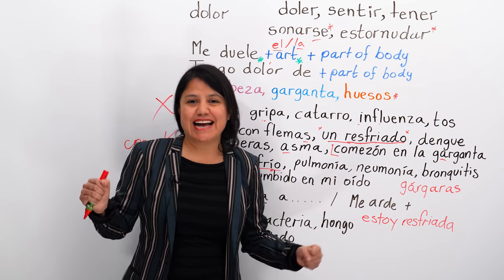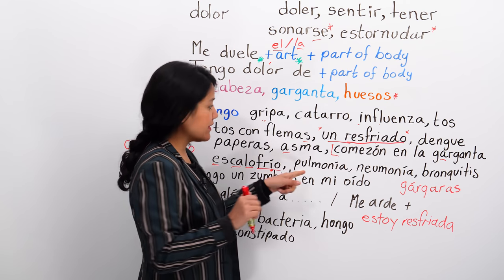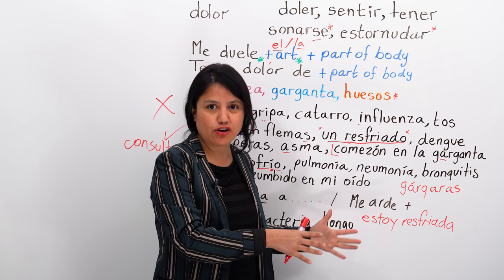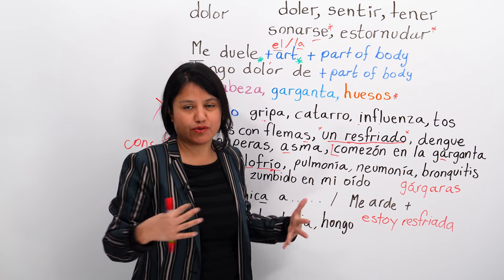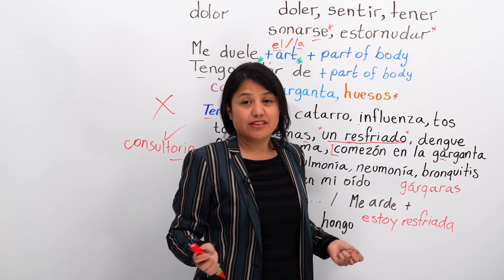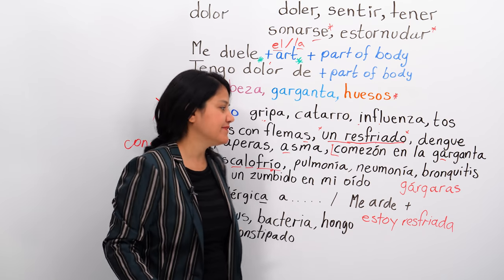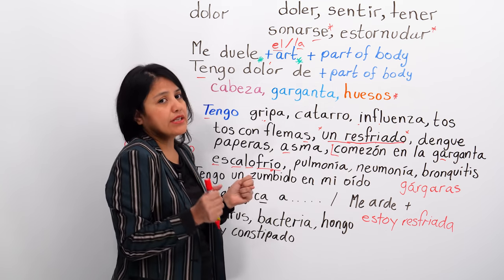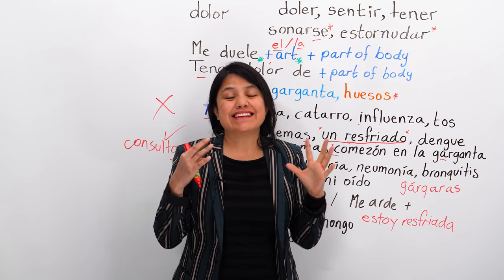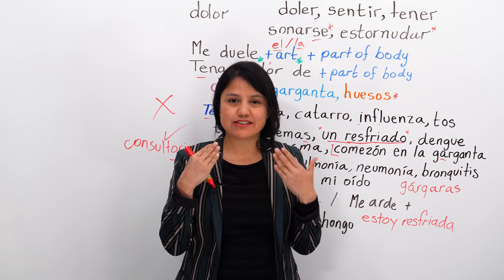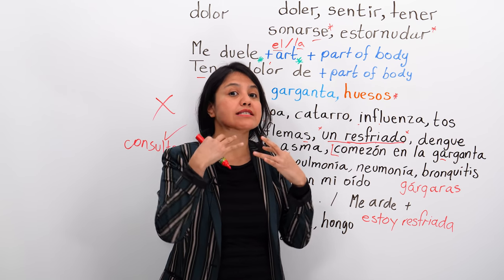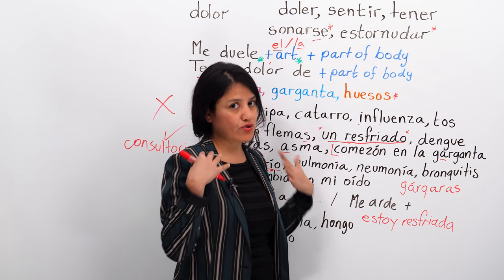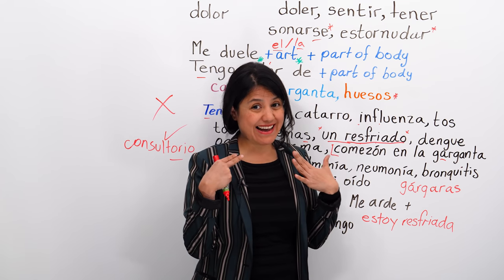Tengo pulmonía or tengo neumonía — pneumonia. Tengo bronquitis — bronchitis. Tengo escalofrío — chills. Tengo comezón en la garganta — when your throat is itchy. Itchy is comezón. Me duele la garganta — my throat hurts, I have a sore throat.